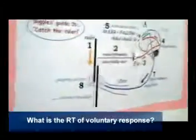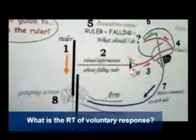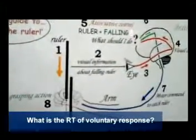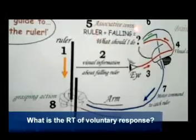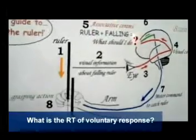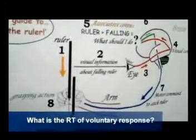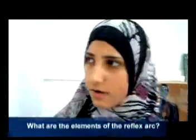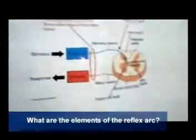The reaction time of a voluntary response is the sum of the time required for a receptor to form impulses in response to a stimulus, transmission of impulses to an integration center of the cerebral cortex, processing the impulses in the integration center, transmission of impulses to an effector, and response by the effector.